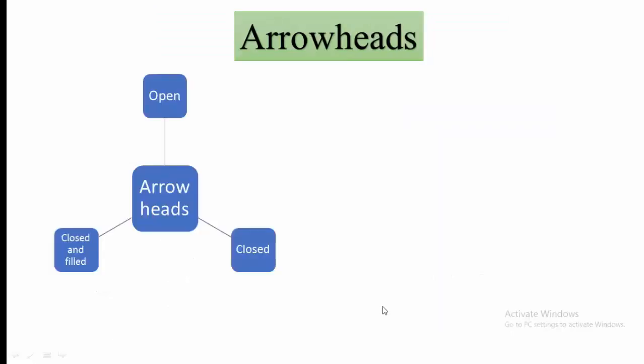Next is the arrowheads. There are three types of arrowheads. First is open. Second is closed. And third is closed and filled. Let us discuss them one by one.